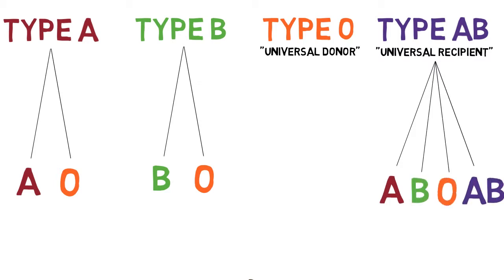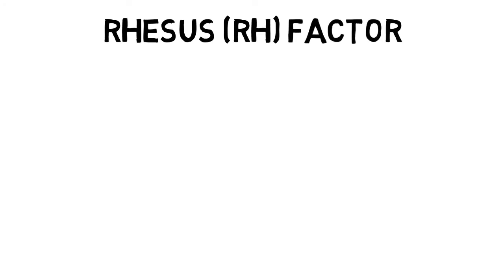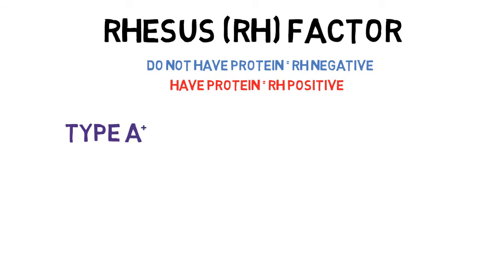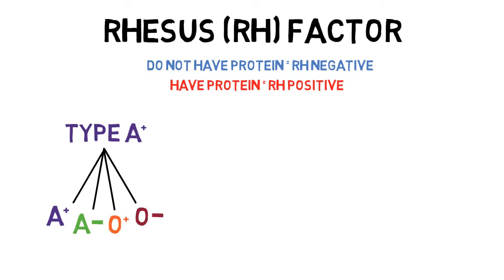To further complicate this, there is an Rh blood protein that affects the ability for individuals to accept blood from some people. Those without this protein factor, referred to as Rh negative, are unable to receive any blood from those who have this protein, referred to as Rh positive. For example, a type A positive could receive blood that was A positive, A negative, O positive, or O negative.